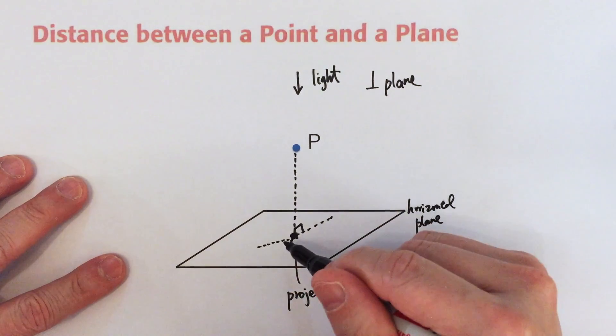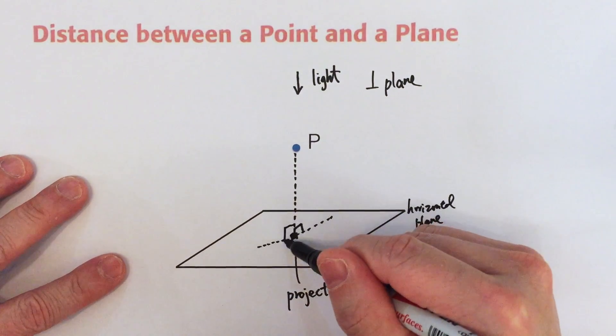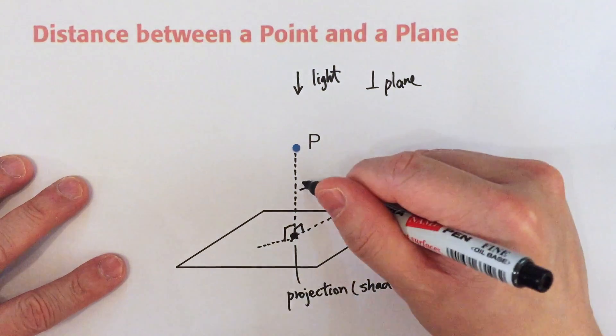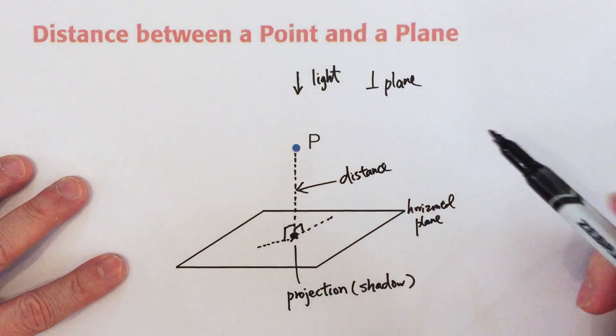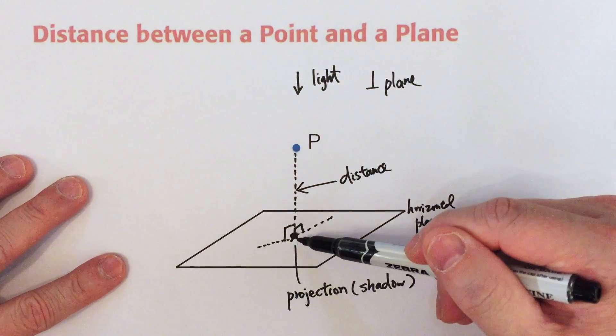Similarly, if you draw another line like this, this angle will always be a right angle. So actually this perpendicular distance will be the distance of point P from the plane.